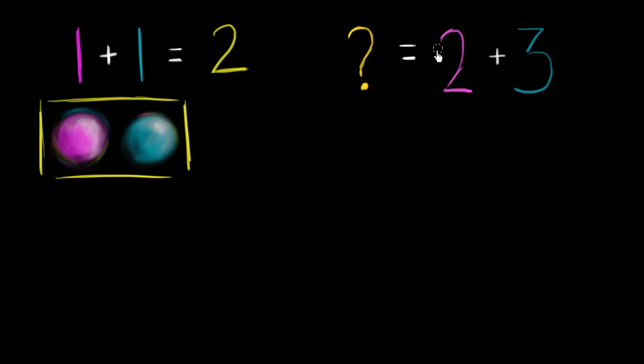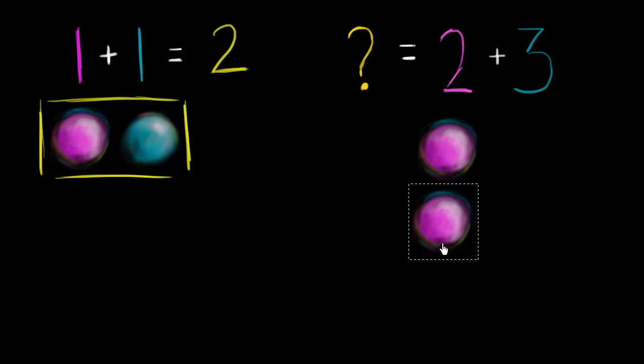Well, you could view this as I have two objects, and then we're going to add another three objects. How many total objects would I have? So you have your two objects, which I'll use purple circles again. So we have one and two purple circles. This is the two right over here.